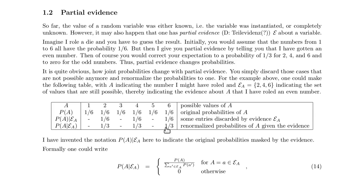So if I roll a die and don't show you the number, but tell you it's an even number, then you would guess it's either 2, 4, or 6 with equal probability 1 third. That would happen if you have partial evidence of a variable. The notation is P of A for a variable where you have no evidence. The calligraphic E sub A represents the partial evidence — it's a set of values that are still possible for A. In this case, calligraphic E sub A would be {2, 4, 6}.